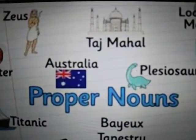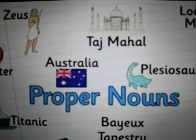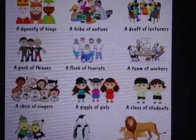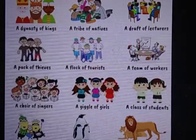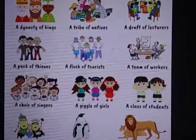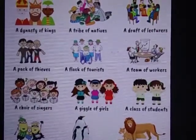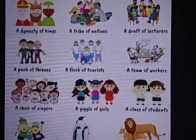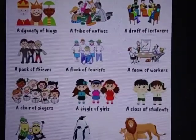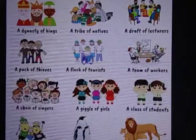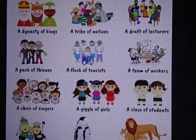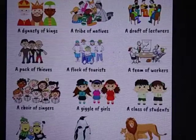Next, we can go to collective nouns. What is the definition of a collective noun? It is a name of a group of people, animal or thing. For example, a dynasty of kings, a tribe of natives, a batch of lectures. These are all examples of collective nouns.